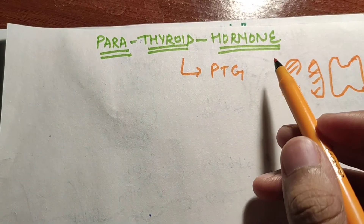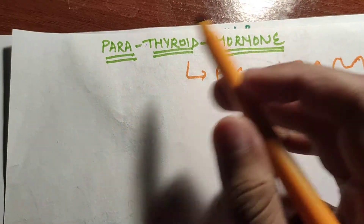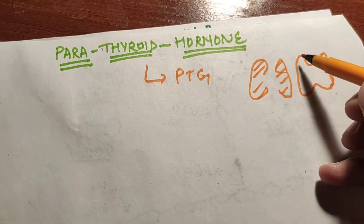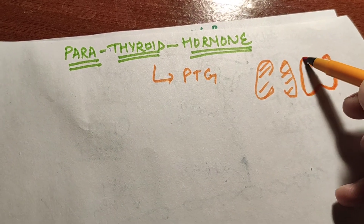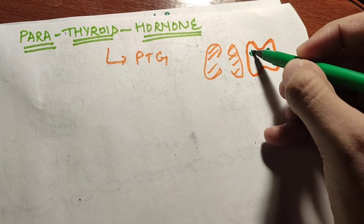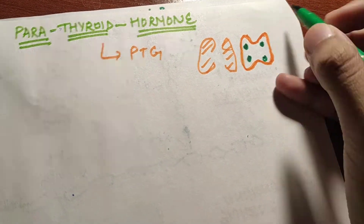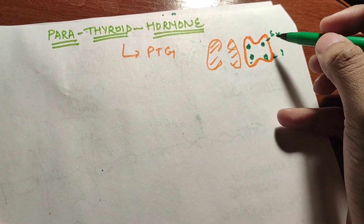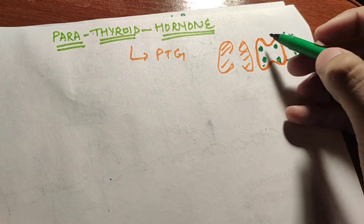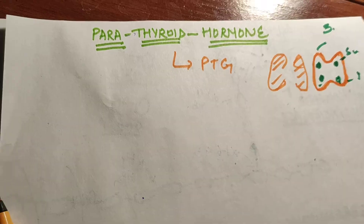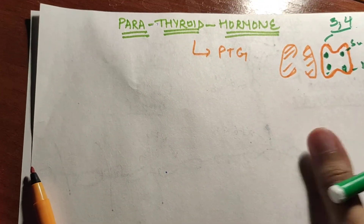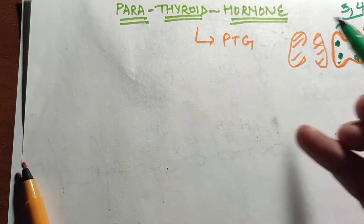Today we'll talk about parathyroid hormone. As the name suggests, it is secreted by the parathyroid gland. The thyroid gland is in our neck, and there are four parathyroid glands — two superior and two inferior. Embryologically, they are derived from the third and fourth pharyngeal pouches.